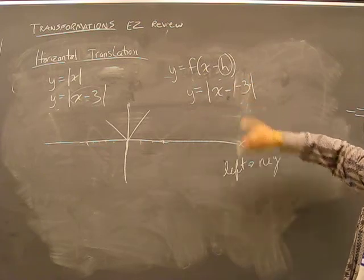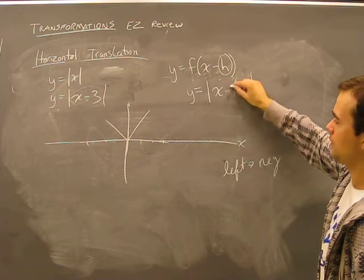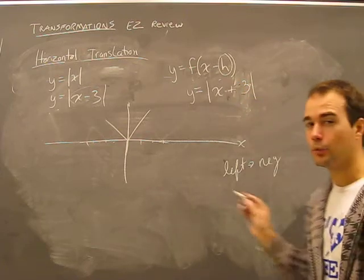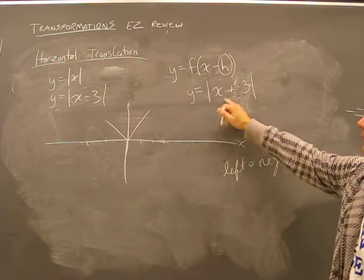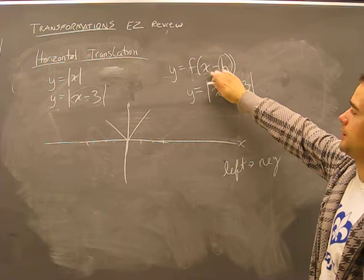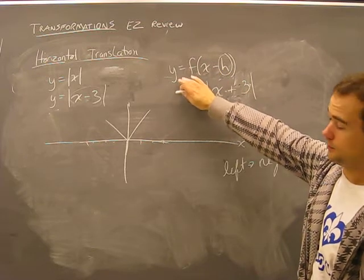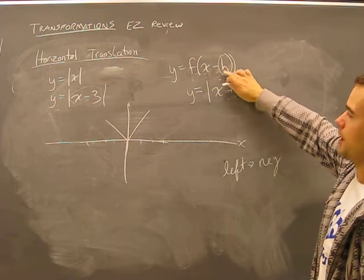What happens when you subtract a minus three? It becomes a positive three. That's why it moves left is shown with a positive sign. Because the function itself is written as this. is given, is been developed, discovered, y equals f of x minus h.